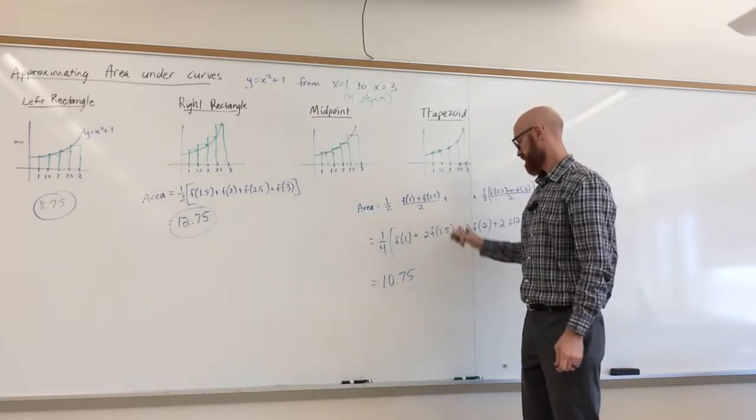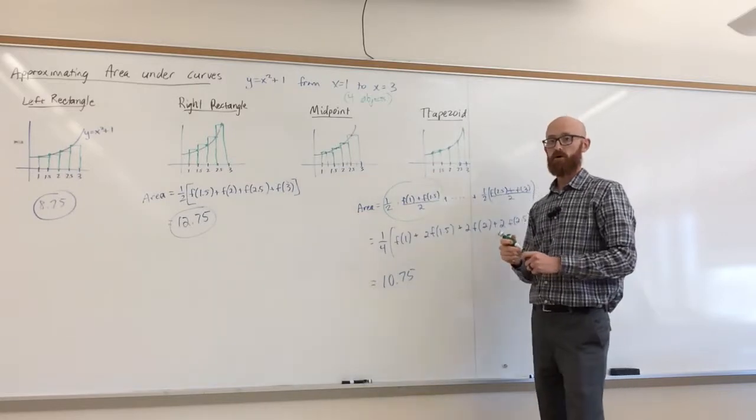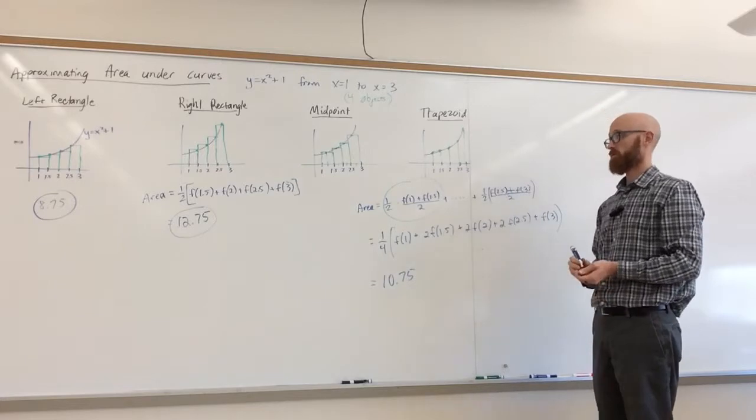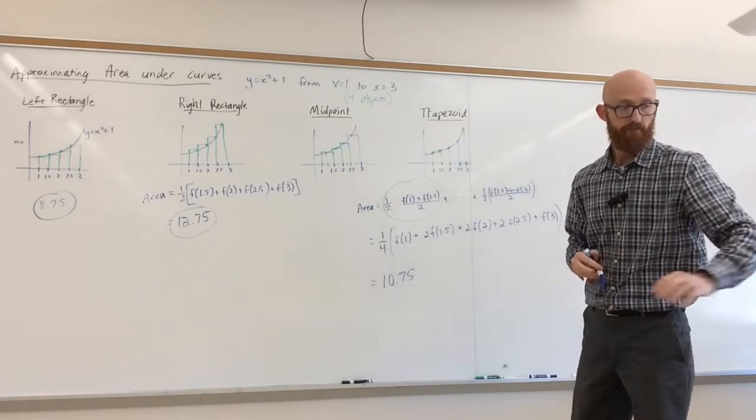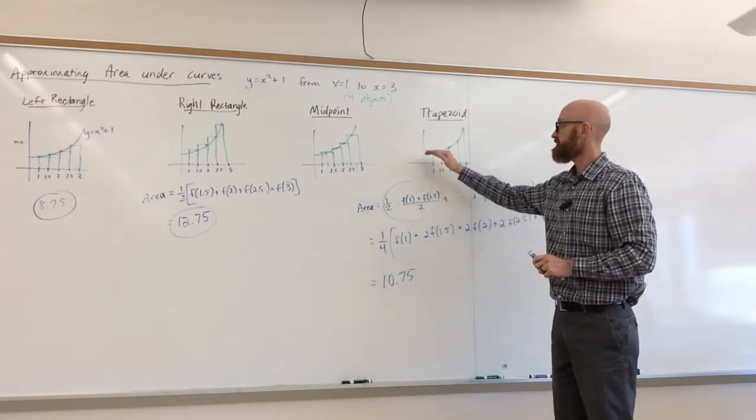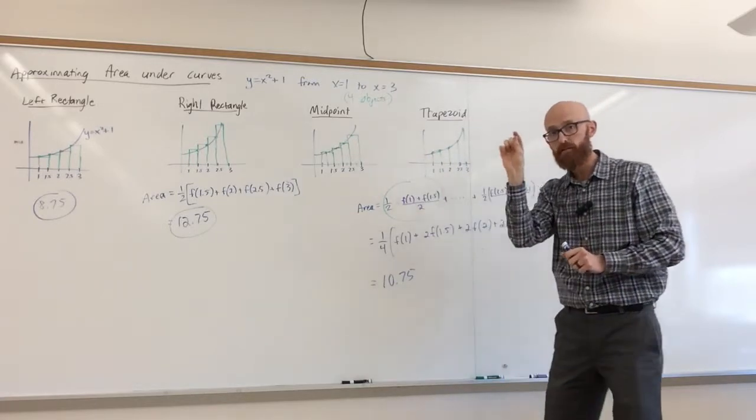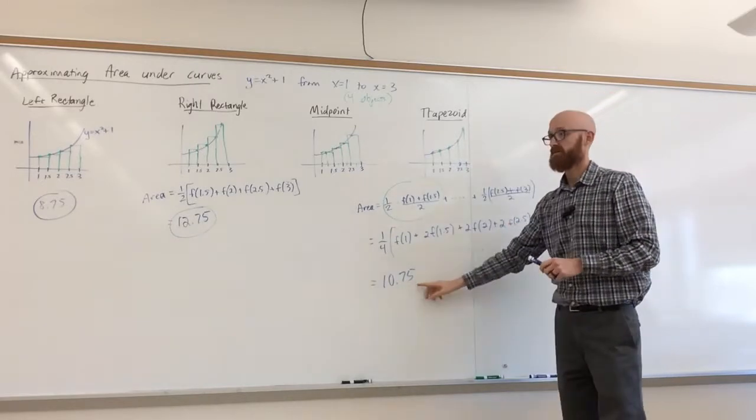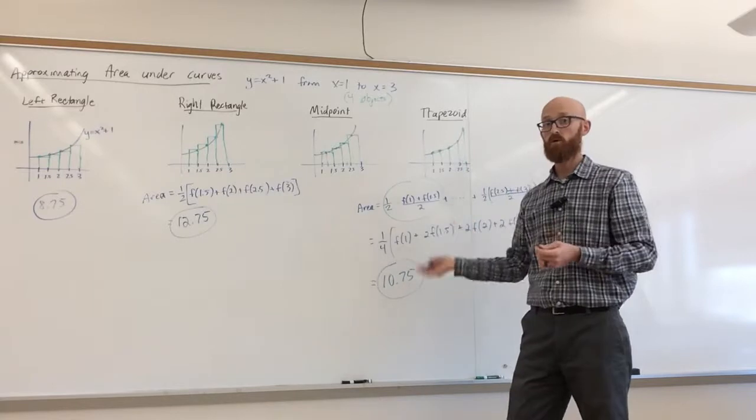So this was all based on one calculation, which was the area of the trapezoid, and then I just quickly extended it to be the area of all four trapezoids added up. And you can see because the curve is increasing and concave up, the trapezoids are just slightly above the curve. In which case 10.75 is an over approximation. So we have a lot of estimates here. It's going to be really close to 10.75.